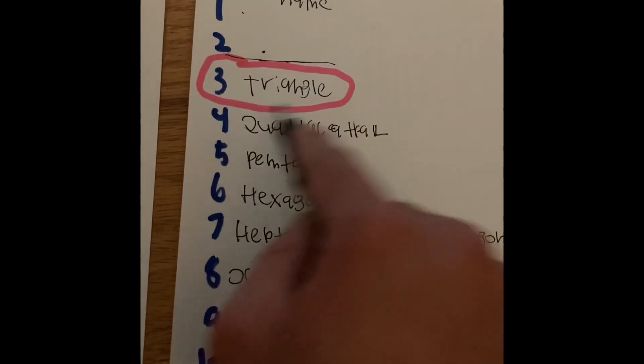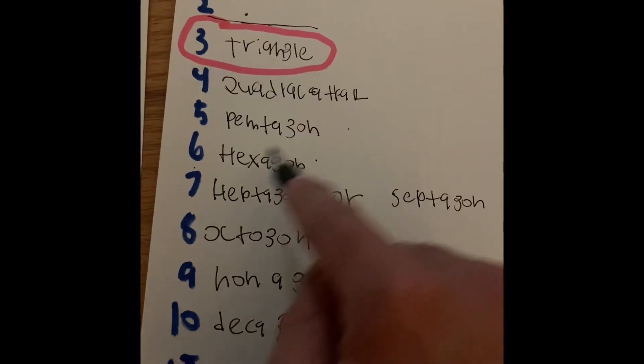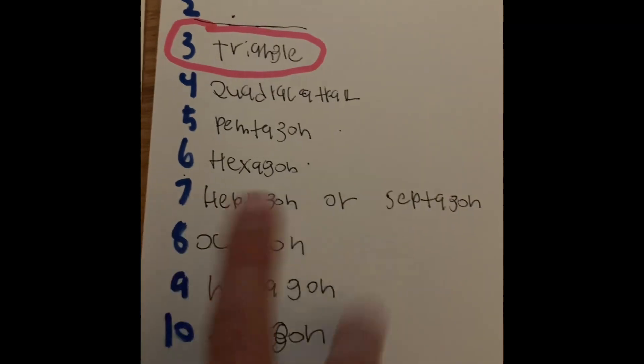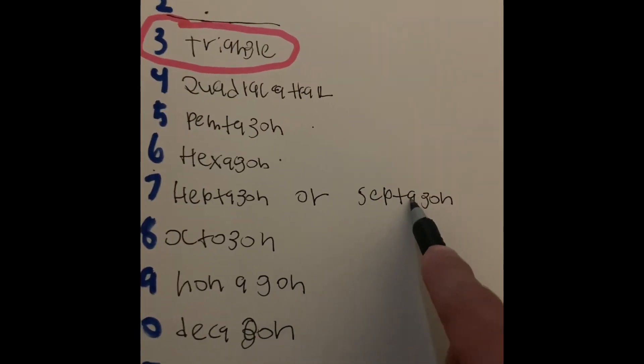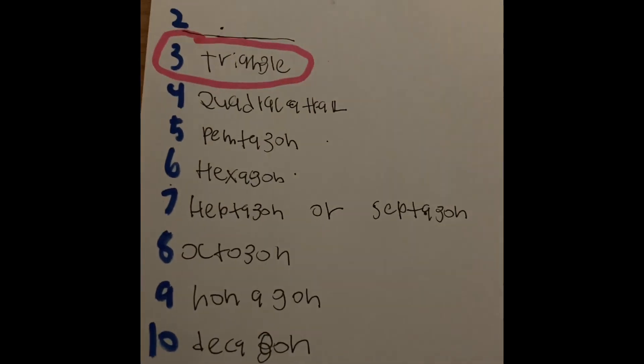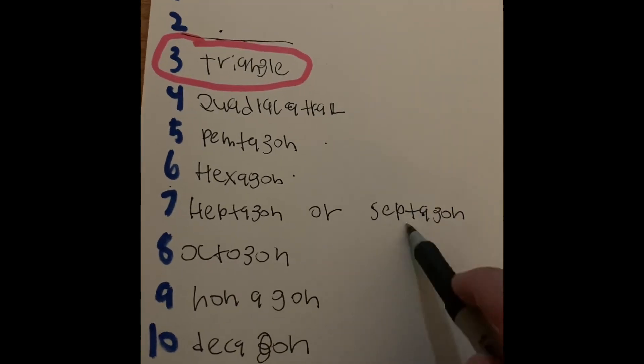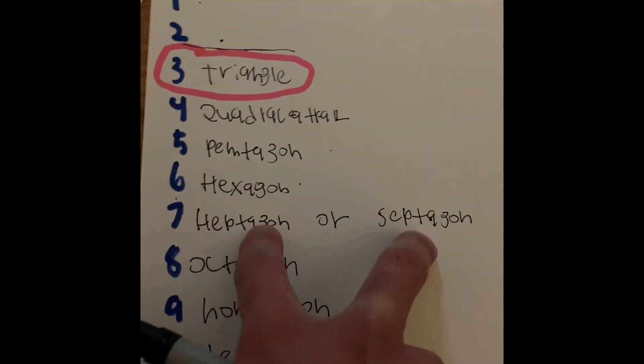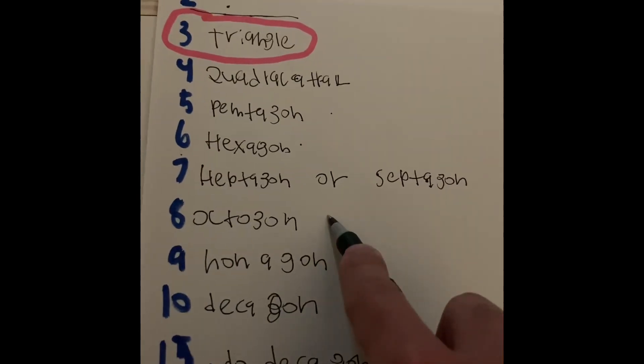So we have quadrilaterals, four, five pentagons, six hexagons, seven, there are two names, a heptagon or a septagon. Usually, textbooks or more formal ideas of this would probably be more like a septagon, but any two answers are accepted. Octagon, like stop signs.